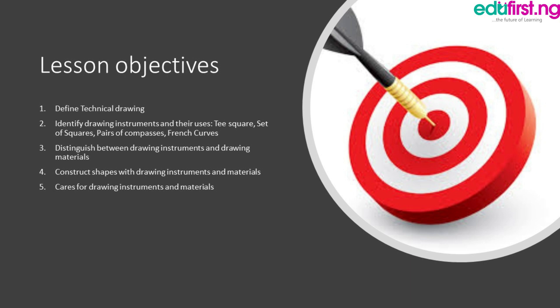At the end of the class, we'll be able to: define technical drawing; identify drawing instruments and their uses, for example T-square, set-square, pair of compasses, French curve, etc.; look at the distinction between drawing instruments and drawing material; look at how drawing instruments and material help us in construction of shapes; and talk about the care for drawing instruments and material.